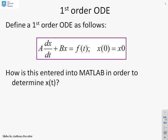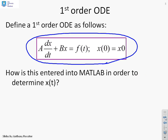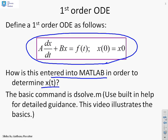Let's define what we're going to assume then. We're going to start with a first order differential equation, just a simple one. You'll notice what we've got here, a dx/dt plus bx equals f(t), and some initial condition, x(0) equals x0. The question we want to ask is, how do we enter this information into MATLAB in order to determine x(t)? The basic command we're going to use is dsolve.m. That's a MATLAB built-in function.